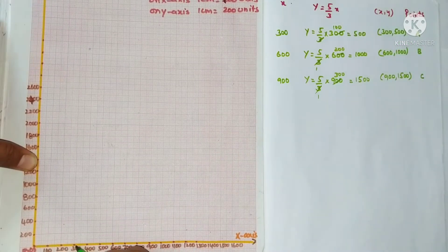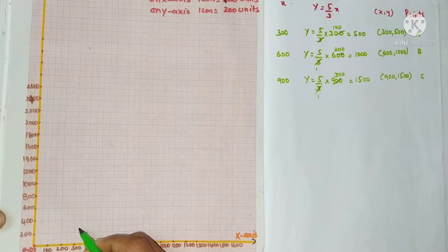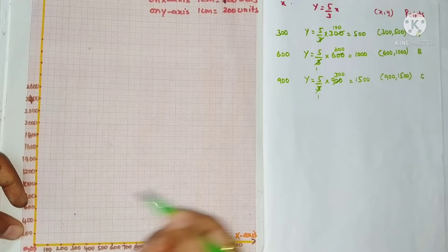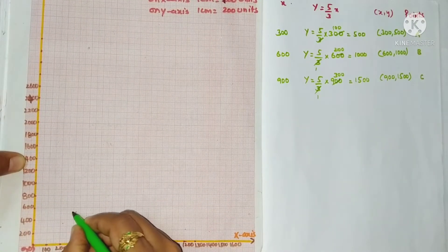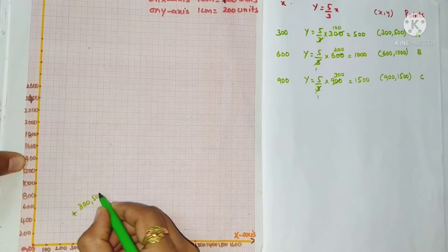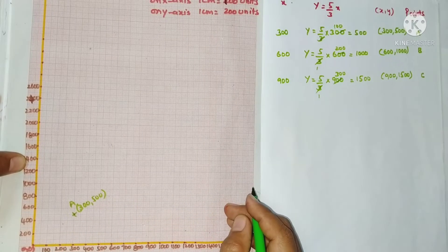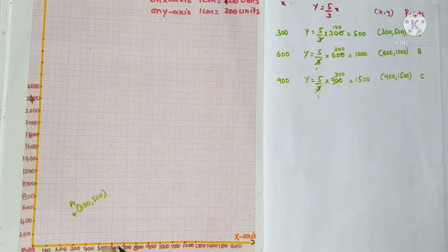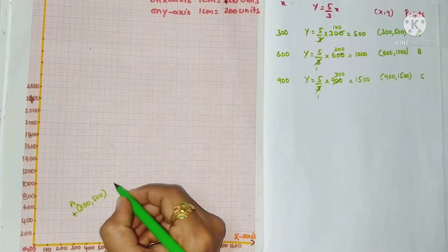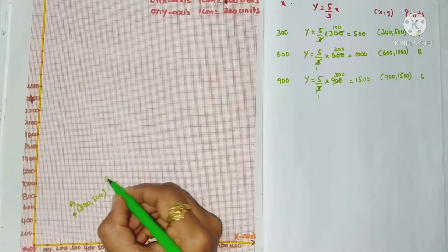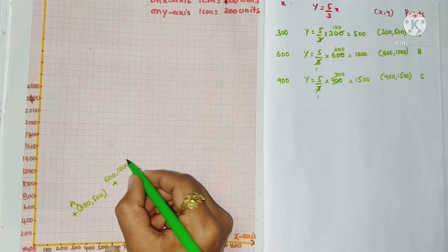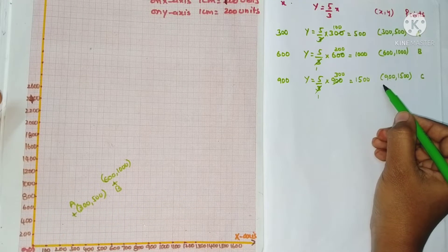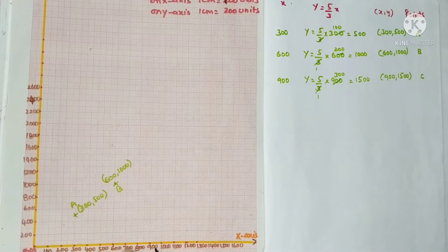Now we'll plot the points. First, point A: on the x-axis 300, on the y-axis 500 — which is between 400 and 600, on the 5th line — so that is (300, 500), point A. Next, point B: x is 600, y is 1000, so (600, 1000) is point B.